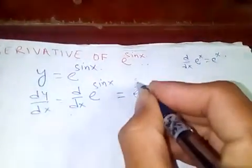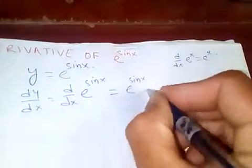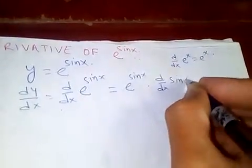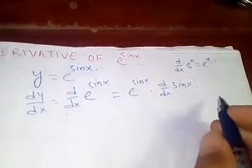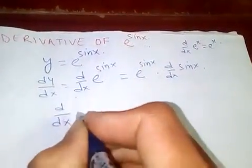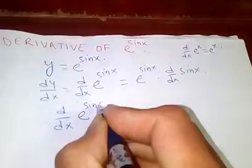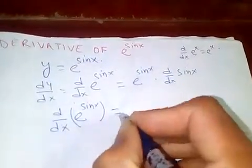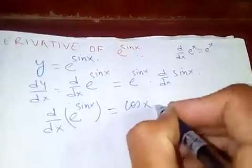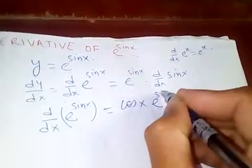this one, it will be e to the sine x and then the derivative of this power, sine x. Okay, therefore d by dx of e to the sine x is the derivative of sine x, which is cos x times e to the sine x.